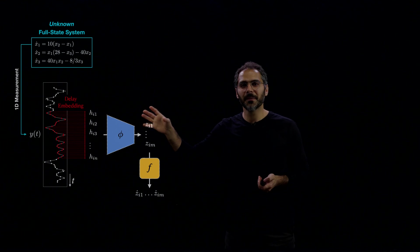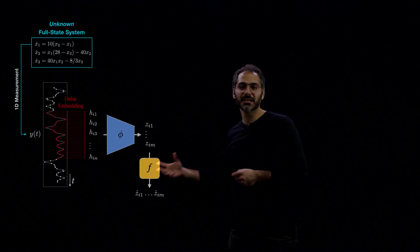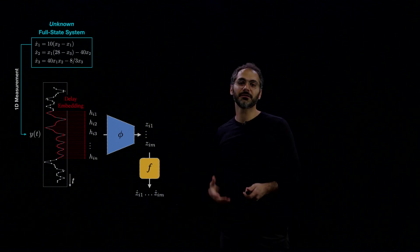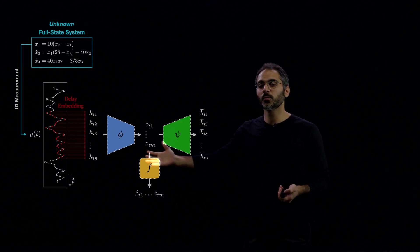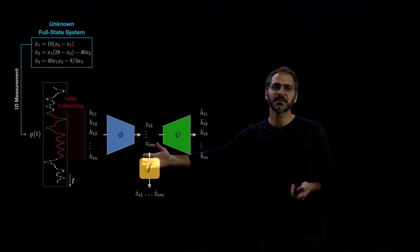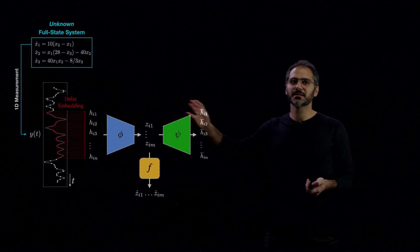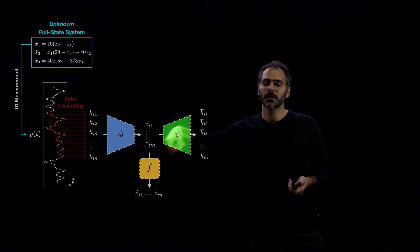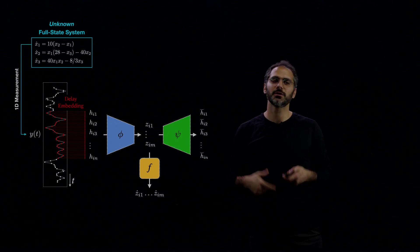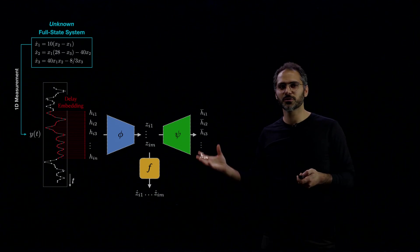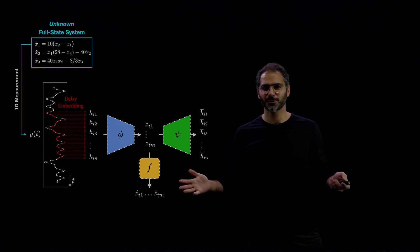Then we can map z to z-dot with this analytical function f, therefore discovering a non-linear dynamical system. And then we should be also able to go from z back to h. This makes this an encoder, an autoencoder, and f is an analytical function. So that's the SINDy part. So it's a SINDy autoencoder, and it uses delay coordinates. So it's a delay SINDy autoencoder.